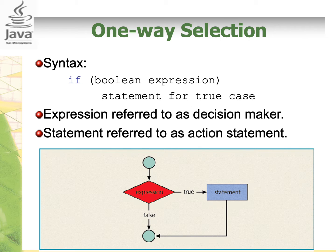What does it mean by one-way selection? In one-way selection, there is only a statement if the expression is true. If the expression is false, nothing will be done. The syntax is: if (boolean expression), then the statement for the true case. The expression here is referred to as the decision maker, and the statement is the action — the part of your code you want executed when the condition is true.